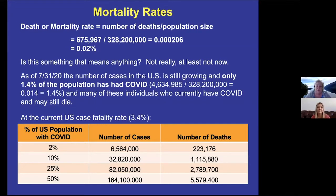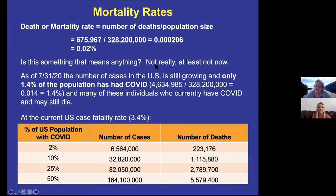A death or mortality rate is simply the number of deaths from a certain disease — or just total deaths — divided by the population size. As of today, this is the number of people in the United States who have died, and this is the population of the United States. You could say that the mortality rate from COVID is 0.02%. But does that really mean anything? And it doesn't, right now.